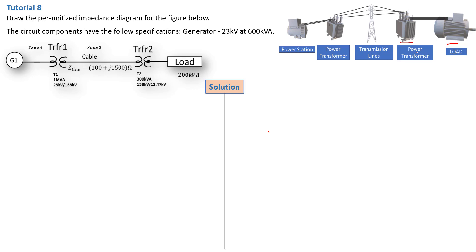As we can see here we have a system. We have a generating power station and we have a power transformer. The power transformer is connected to a transmission line. At the end of the transmission line you have another power transformer which is stepping down, and you have your load which in this case is a motor — but your load could be anything: a factory, a school, a house, a small town.